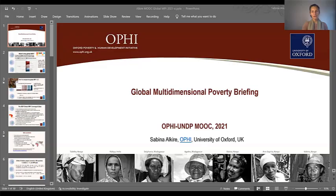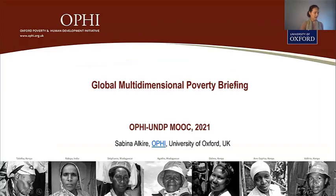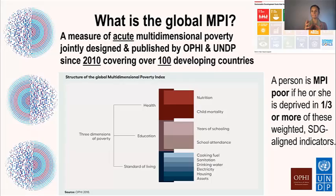I'm Sabina Alkair and today we are going to be focusing on the Global Multidimensional Poverty Index that we have the privilege to co-design and update each year with the UNDP Human Development Report Office of UNDP. The Global Multidimensional Poverty Index measures acute multidimensional poverty across over a hundred developing countries and has done so since 2010.